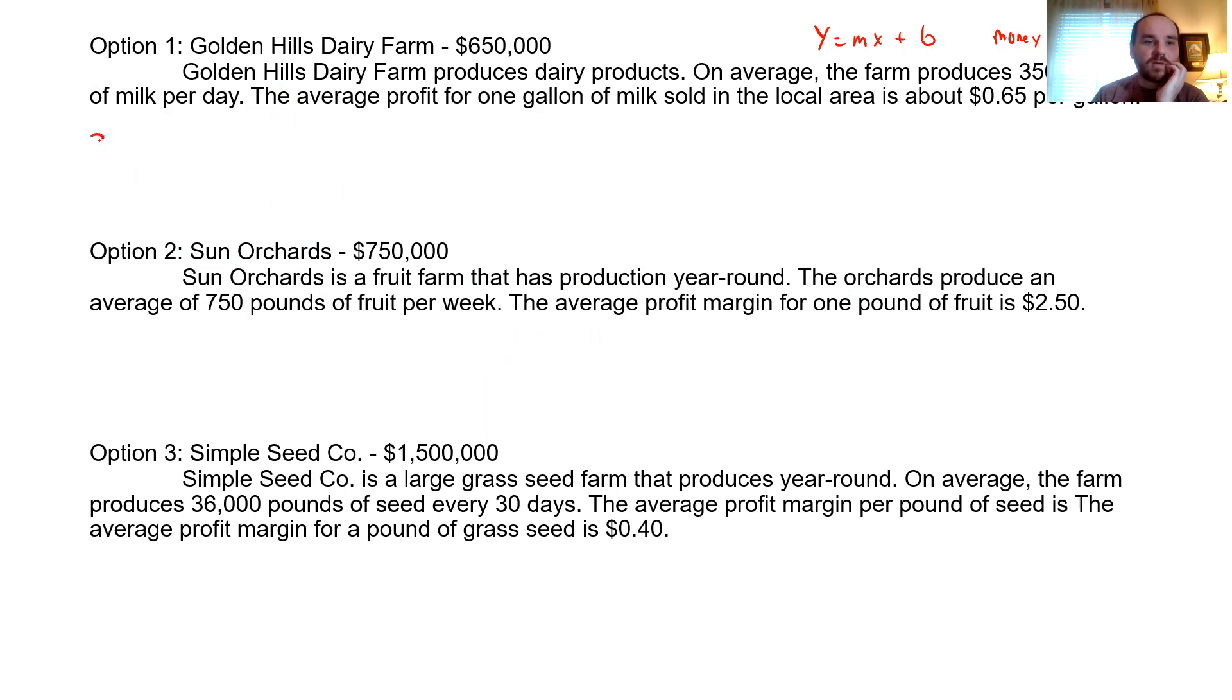So let's go ahead and do that for this one. We make 350 gallons per day, and then each gallon is an average profit of 65 cents. So multiply that by 0.65, and we're left with 227.5. So this farm makes $227.50 per day. So since the rate is 227.5, we can just write the equation y equals 227.5 times x minus, and then the cost is $650,000. So that was pretty easy. We don't have to do a whole lot of work on this one.